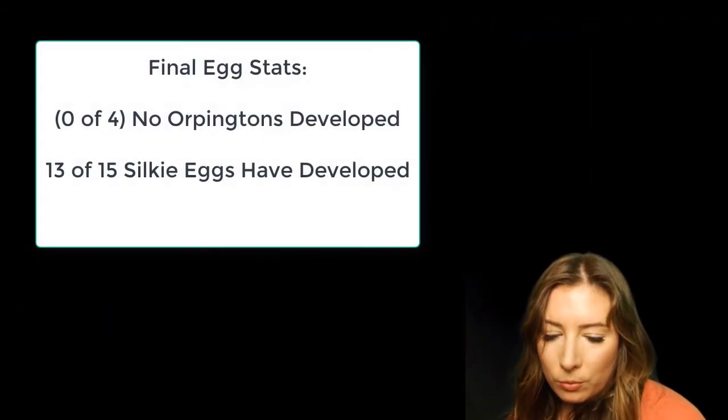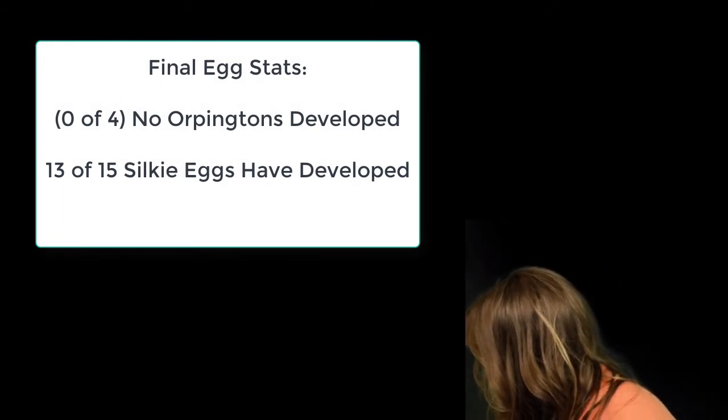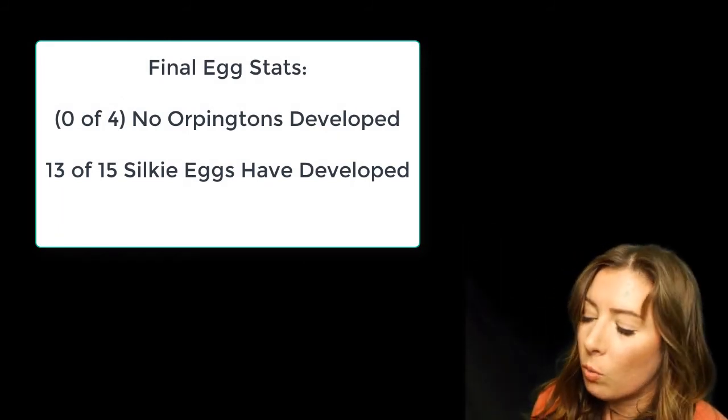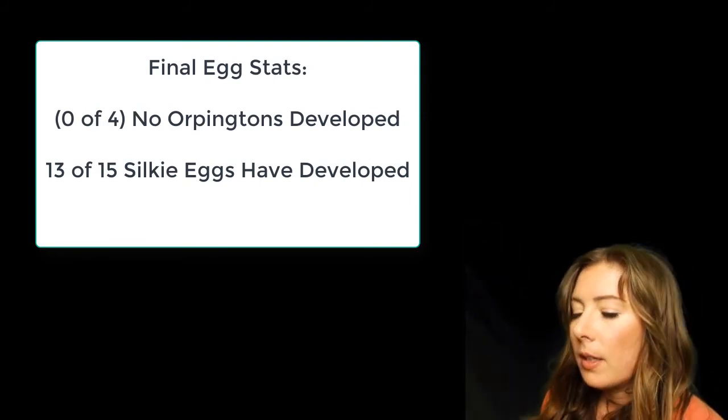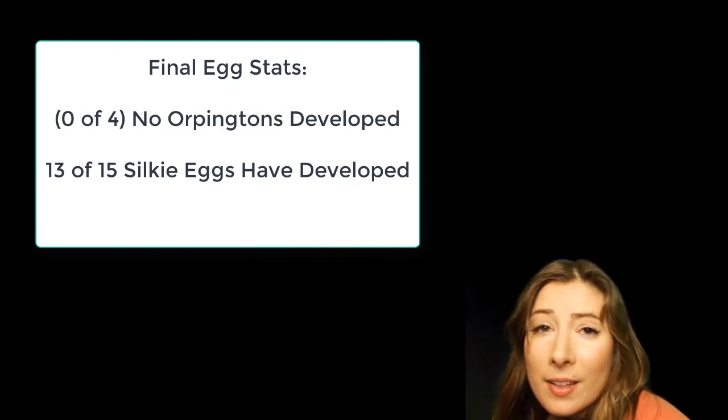All of the Orpingtons, so four Orpingtons, and two of the silkies. Aww. One was infertile to begin with, and then the other one died. He had a blood ring. But yeah, there.